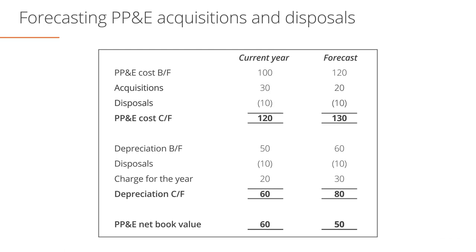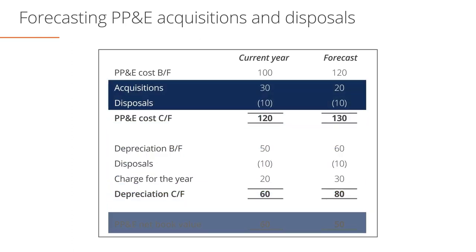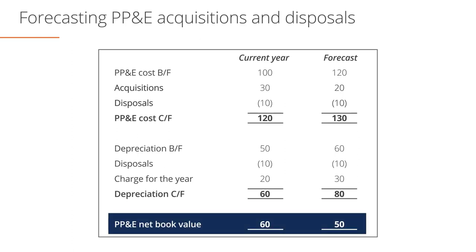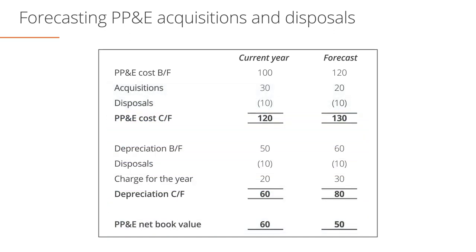When forecasting PP&E from first principles, we typically start with forecasting acquisitions and disposals and then work down to the PP&E net book value. When forecasting using a quick and dirty approach, we do the reverse — we start with PP&E net book value and work upwards to get acquisitions and disposals. You will see this first hand in the case study. Disposals can be forecast based on the historic relationship between the gross cost of opening PP&E and the gross cost of disposals.